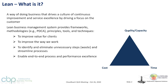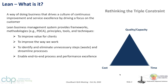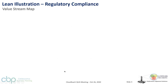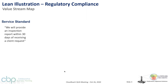Some of you may be familiar with the classic iron triangle — cost, time, quality, capacity — give me any two. What lean really does is allow you to reduce cost, improve throughput time and lead time, and improve quality and capacity. It changes your perspective on that whole triple constraint thinking.